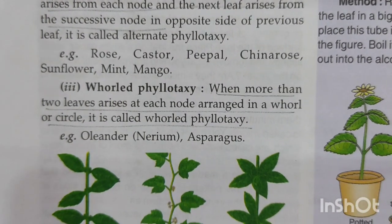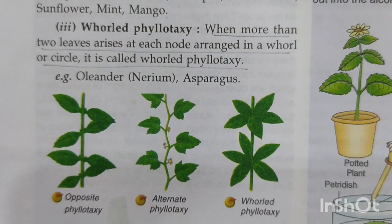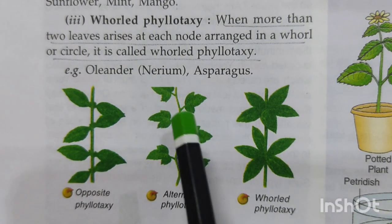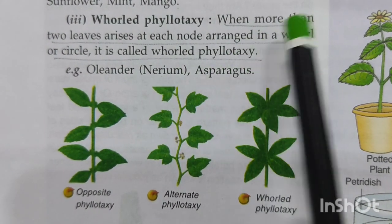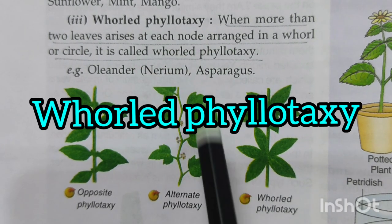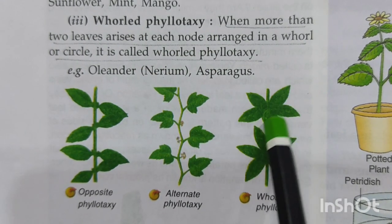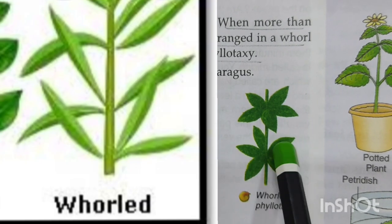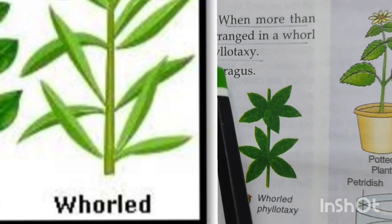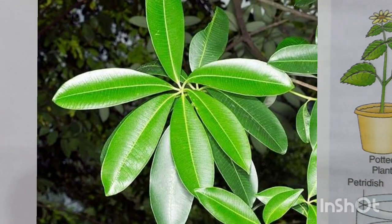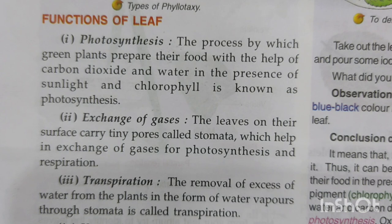Next is whorled phyllotaxis, which means more than two leaves come out from each node and they form a complete ring-like structure. This is known as whorled phyllotaxis, and you can see the example in the picture that is being shown.